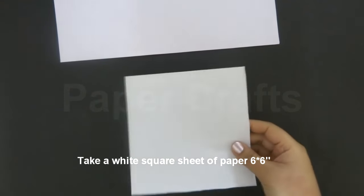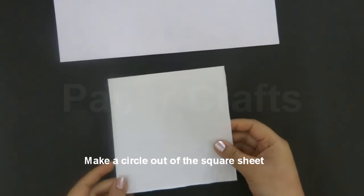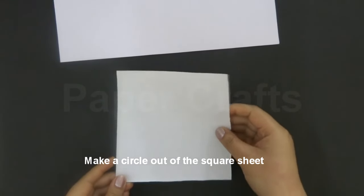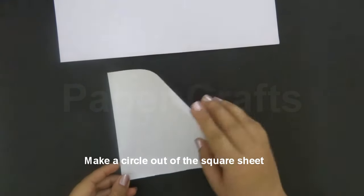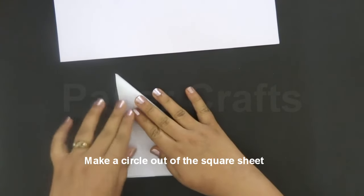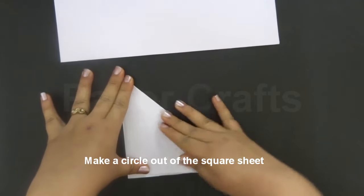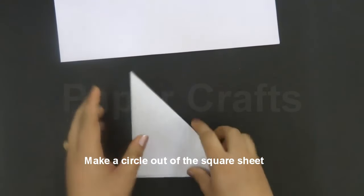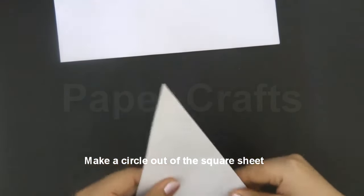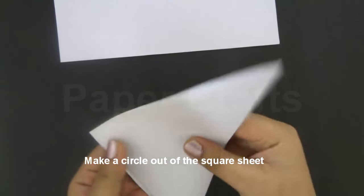To start with the honeycomb ball take a white square sheet of paper of approximately 6 by 6 inches. We need to make a circle out of this. So to do that fold it across the diagonal. Again fold it along the half.